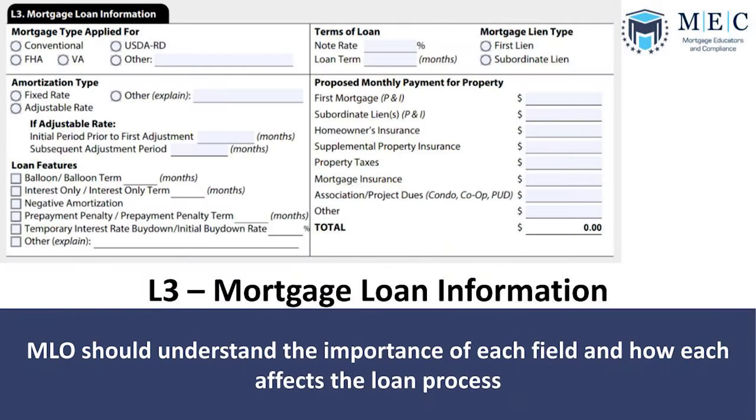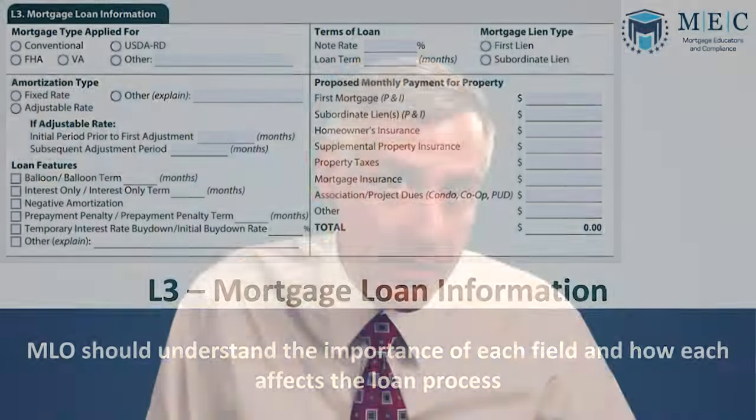Section L3 captures loan information: is it conventional, USDA, FHA, VA, etc.? Also the terms of the loan — note rate and actual term. Important: everything is in months, so a 30-year loan is 360 months, a 15-year is 180 months. Also capture the amortization type and any loan features.